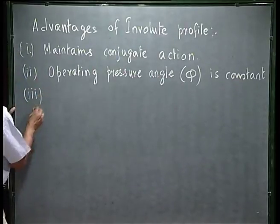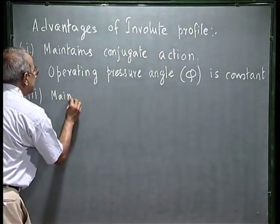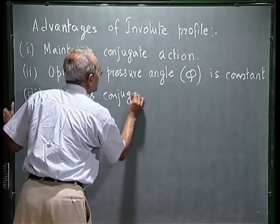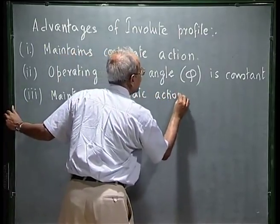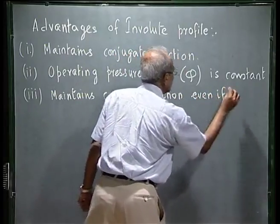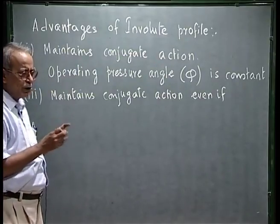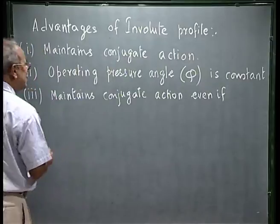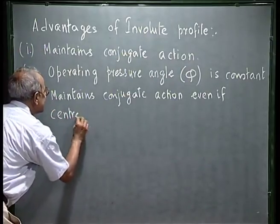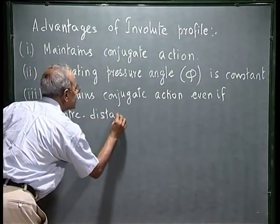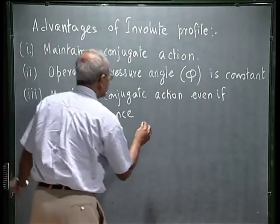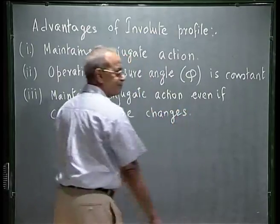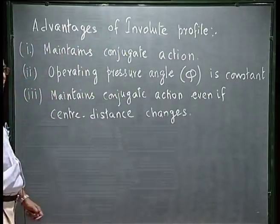The third advantage is that a pair of involute gears maintains conjugate action even if the center distance between the gears has changed. That means we have a pair of gears — we can mount them with a little different center distance and the conjugate action will still be maintained, even if the center distance between the pair of gears changes. I will explain this with reference to the figure we discussed last time.